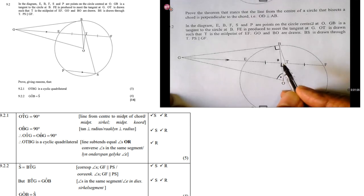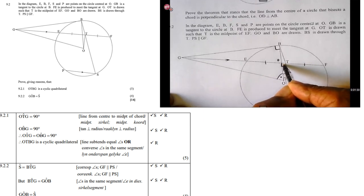OTG, this angle here, is 90 degrees. How do we know that? Line from the center to the midpoint of a chord. Remember, OT is the line from the center drawn to the chord. Remember, T is the midpoint of chord EF. So, therefore, this angle is 90. We just proved the theorem a few seconds ago.